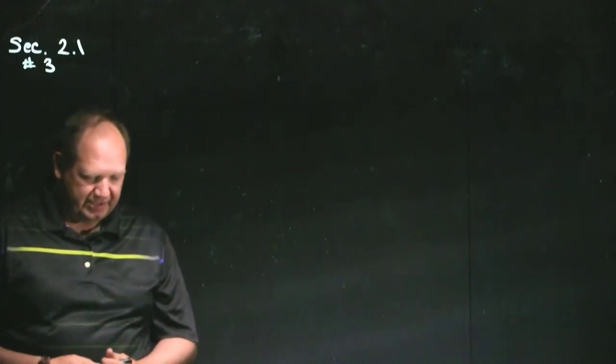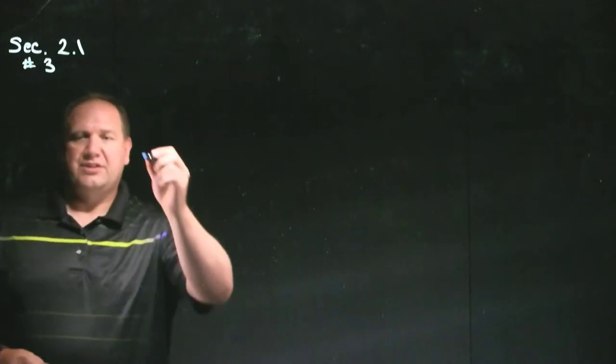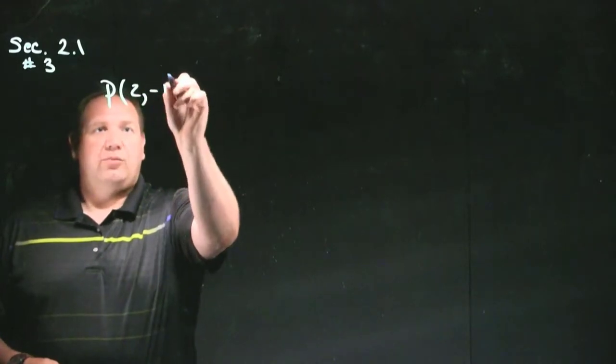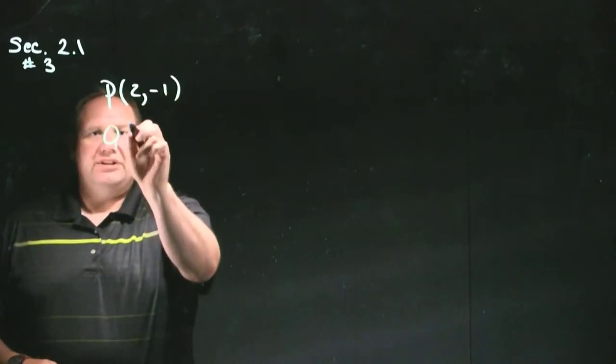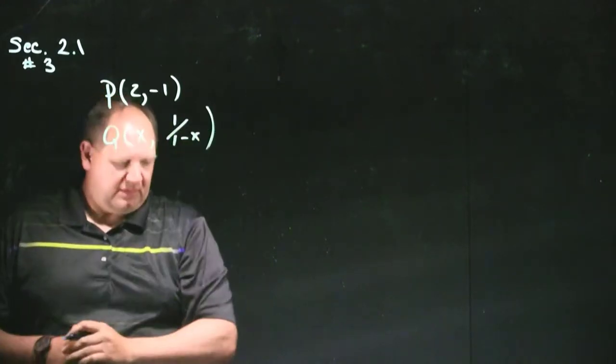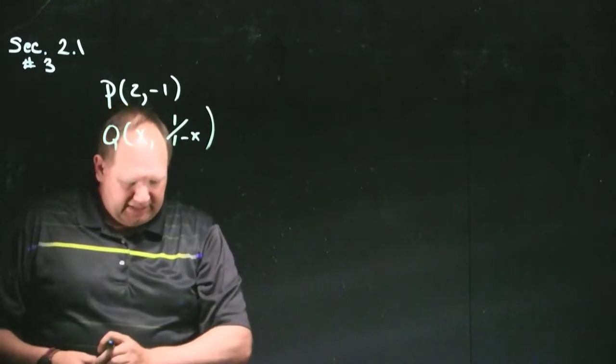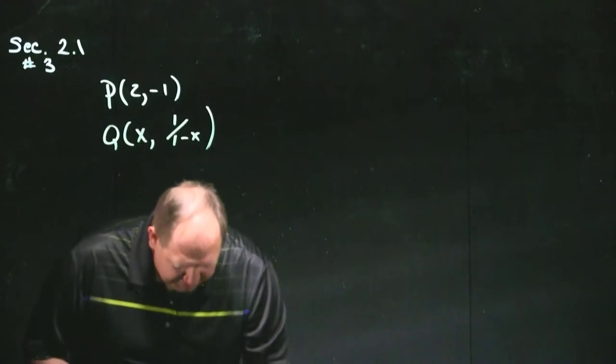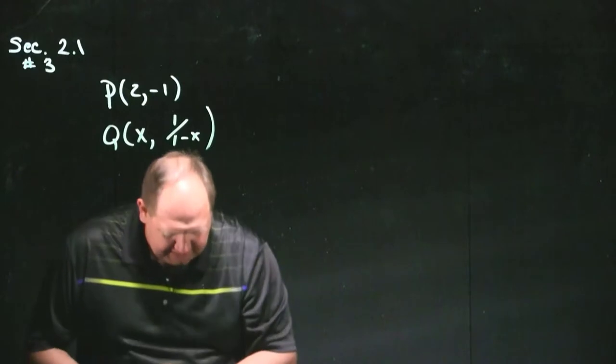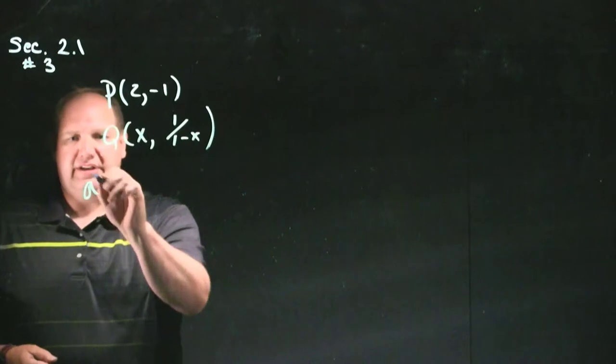So this first question, number 3, says that we have a point given to us. So this point is p, and we're told that q is the point x, 1 divided by 1 minus x. That's the information we're given. So then, part A of the problem asks us, if q is that point, use your calculator to find the slope of the secant pq correct to 6 decimal places.